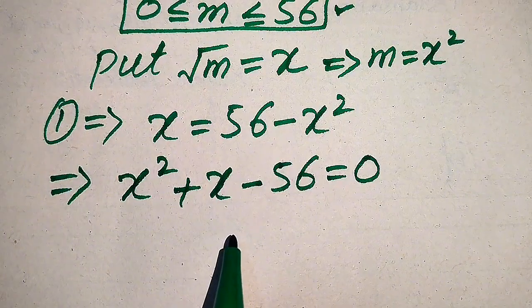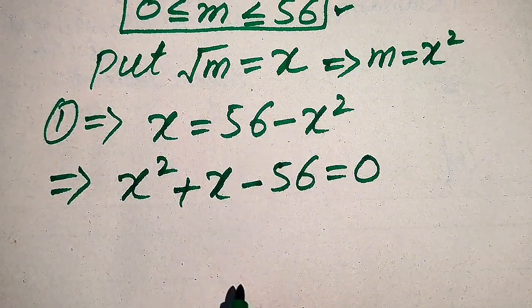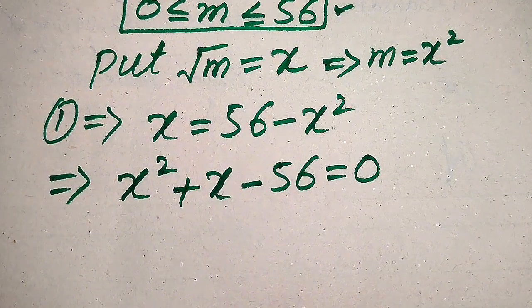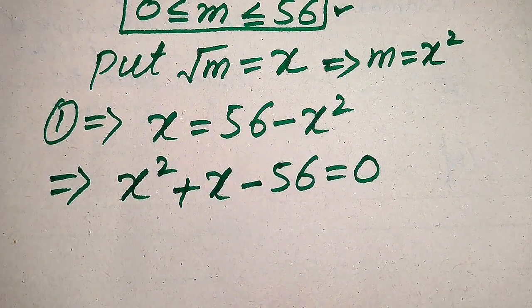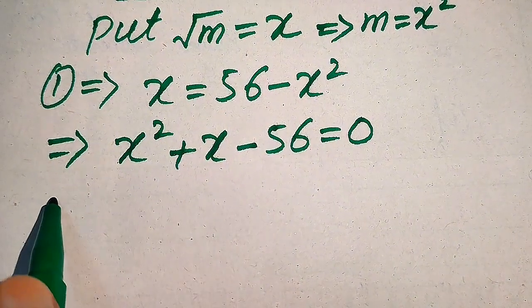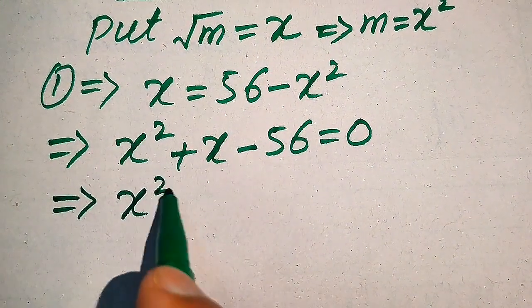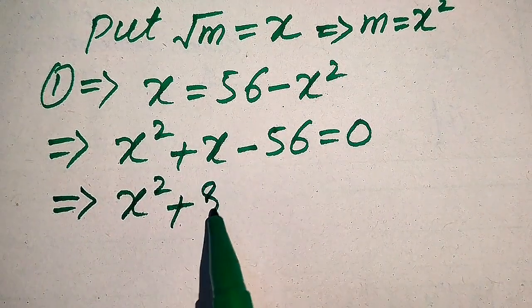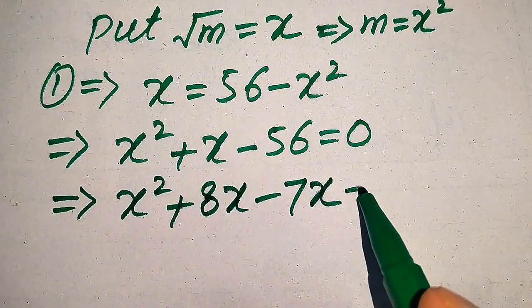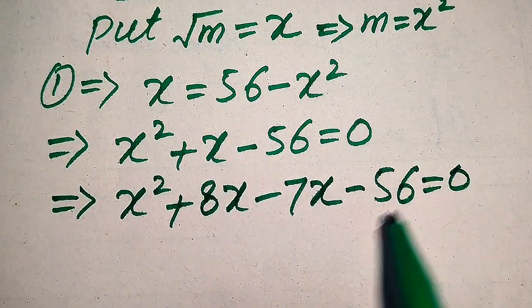We have converted our radical equation into quadratic form. There are three methods to solve a quadratic equation: factorization, completing the square, and the quadratic formula. Here we use the factorization method by breaking the middle term, writing it as x squared plus 8x minus 7x minus 56 equals 0.